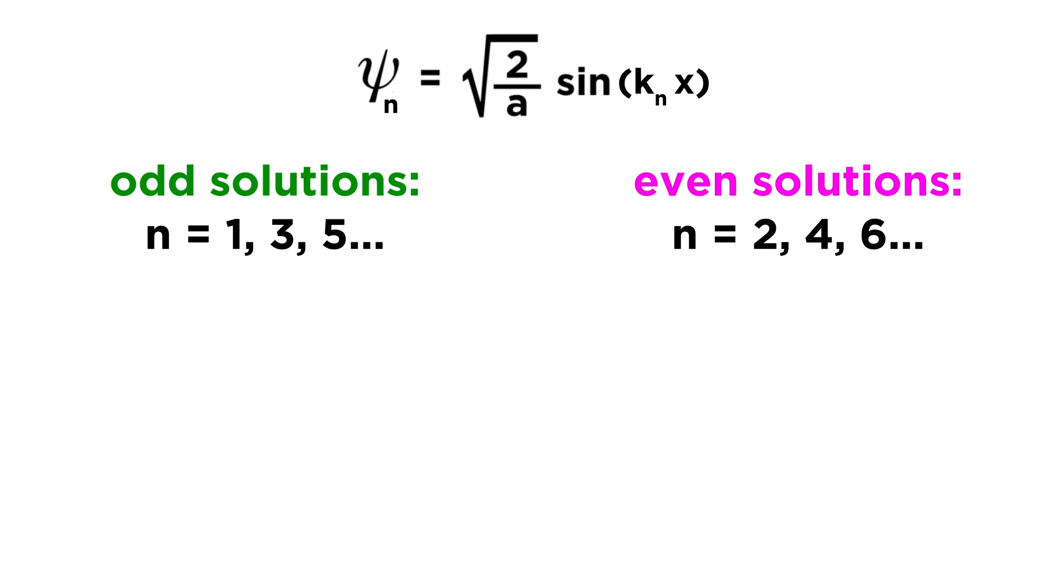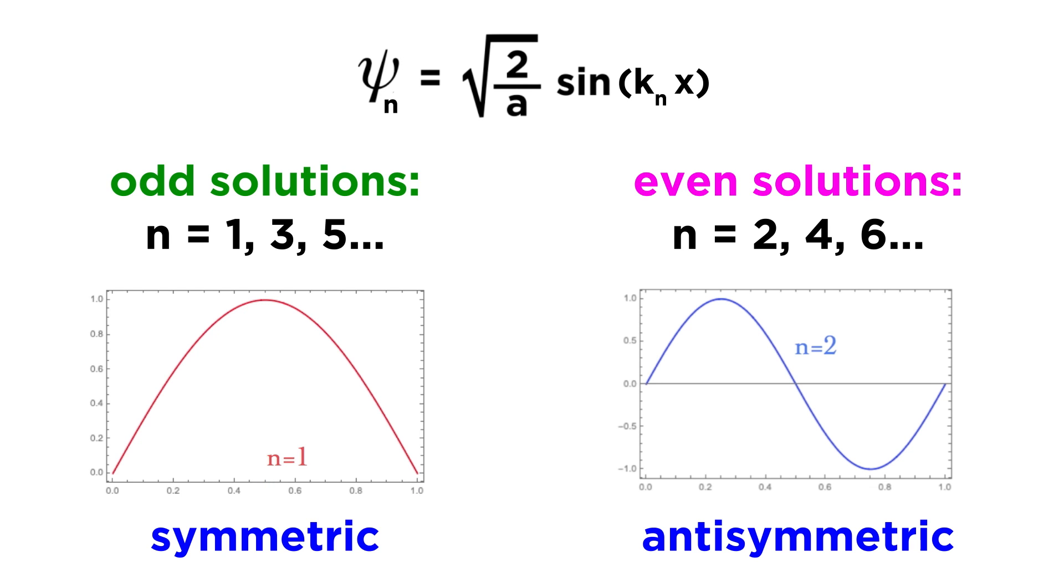And the last realization we will highlight is that there is a clear pattern emerging between the odd and even solutions, with odd solutions being those where n equals an even number. The odd solutions are symmetric about x equals a over two, meaning that the left and right halves are mirror images. And the even solutions are anti-symmetric about this line, meaning that the halves are vertically flipped, such as the case with n equals two, with one peak going up and the other going down.